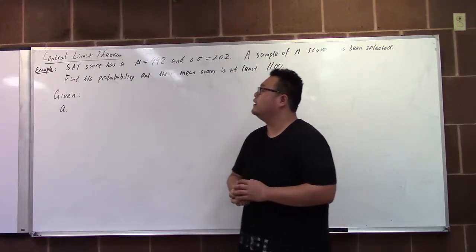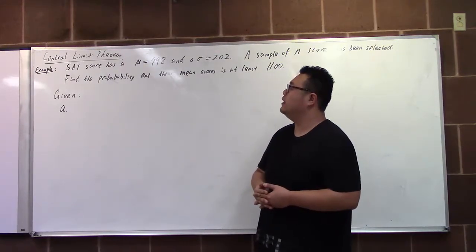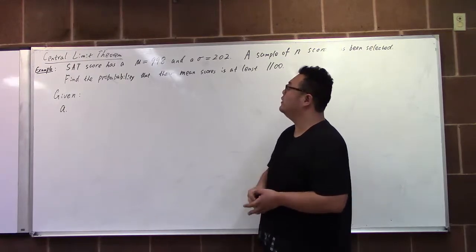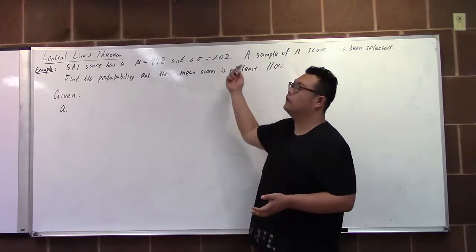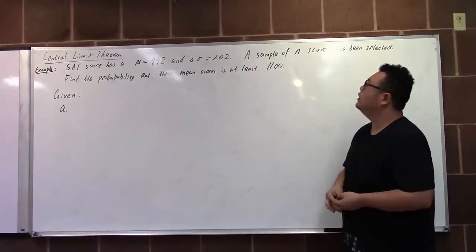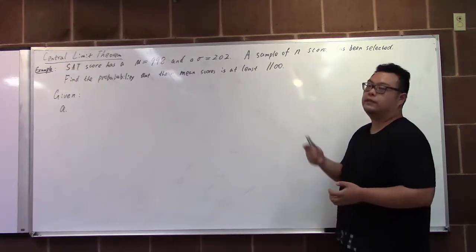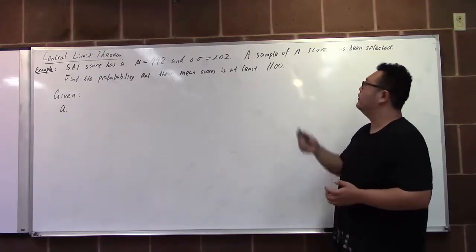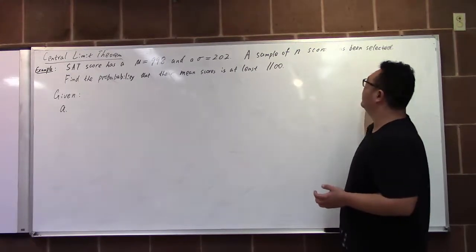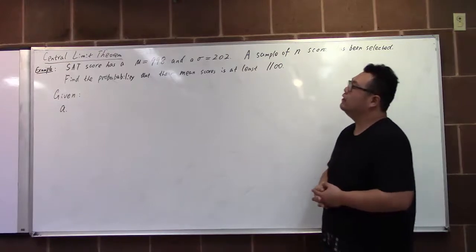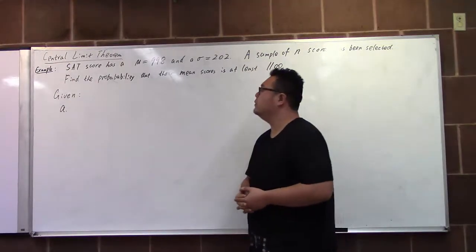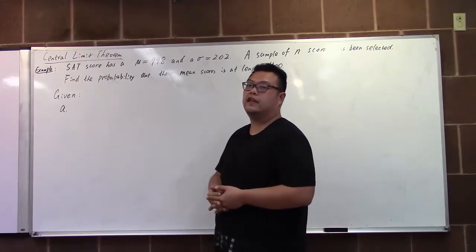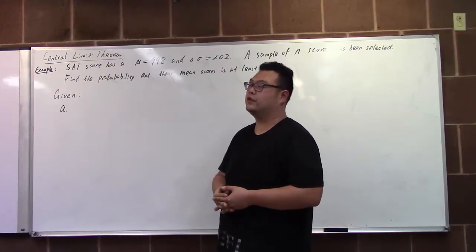The SAT score has a mean score of 998 with a standard deviation of 200. A simple random sample of size n — of n different scores — has been selected. We'll find the probability that their mean score is at least 1,100.